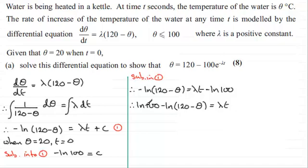And when we're subtracting logs then, this is exactly the same as doing the division of 100 over 120 - θ, okay? A basic rule for logs there. And it equals λt. Now we can remove the natural log: 100/(120 - θ) = e^(λt).